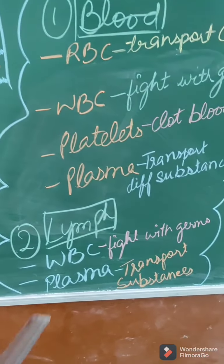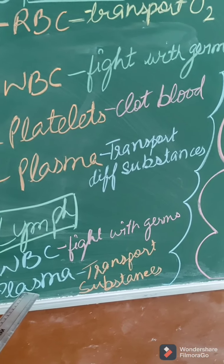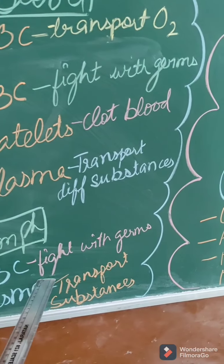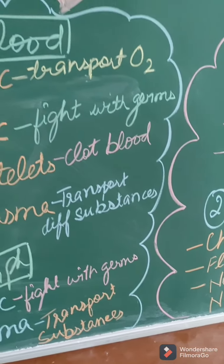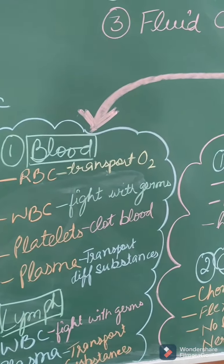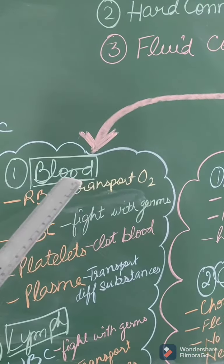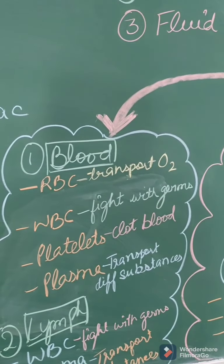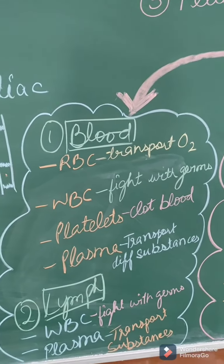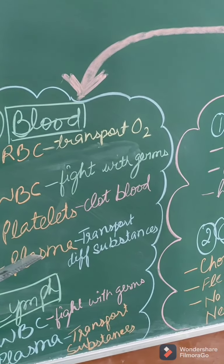Now moving to lymph. Lymph has only two components: WBC and plasma. The function of WBC is the same — fight with germs. Plasma functions to transport different substances. So overall, the function of blood is to transport different substances, and the function of lymph is to protect us from germs and diseases.